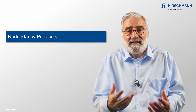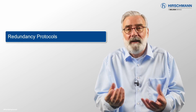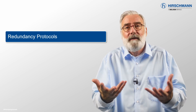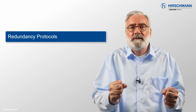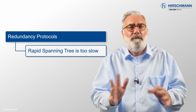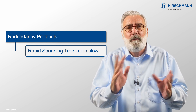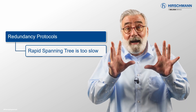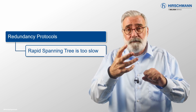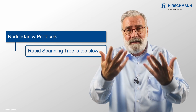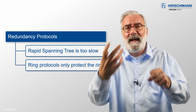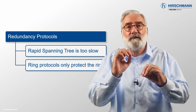While redundancy protocols like SpanningTree work well in an office environment, they lack characteristics which are essential in an industrial environment. First, the mesh topology which is commonly used with SpanningTree is often not practical for industrial networks. Second, industrial applications are time sensitive and they cannot tolerate the slow or unpredictable recovery times which are typical of office redundancy mechanisms. This is the reason why industrial networks typically use standardised or proprietary ring-based redundancy protocols.